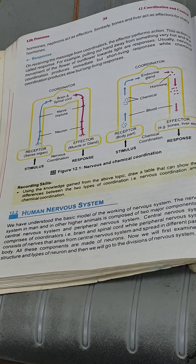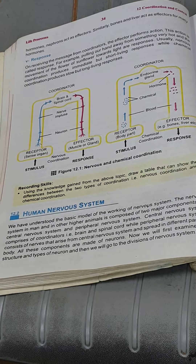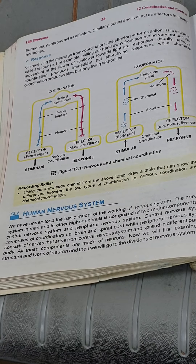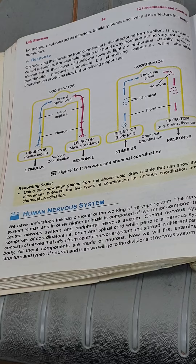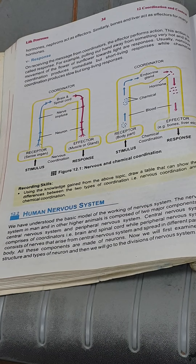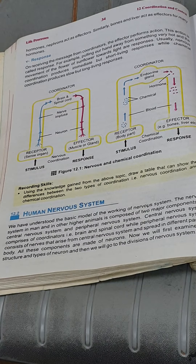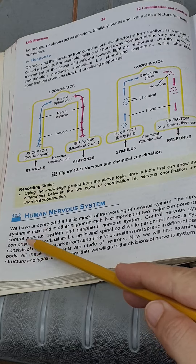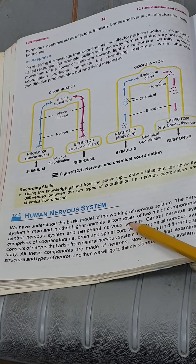Bismillah ar-Rahman ar-Rahim. Class 10, we will discuss the human nervous system — the second topic of coordination and control. The human nervous system is a very complex system. It consists of two parts: the central nervous system and the peripheral nervous system.